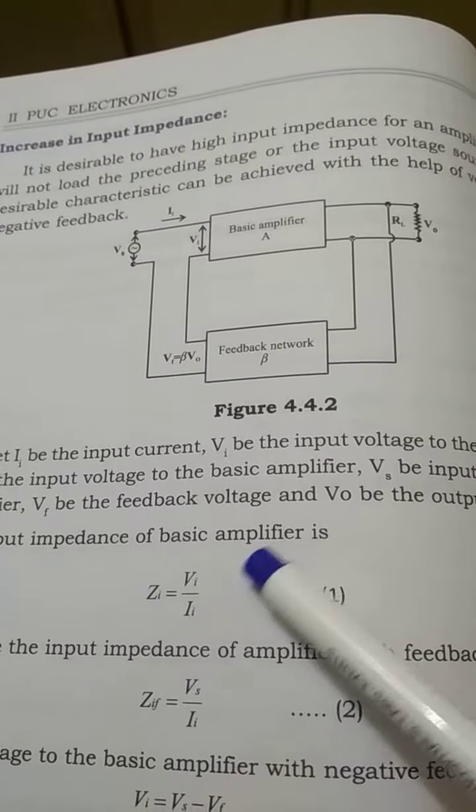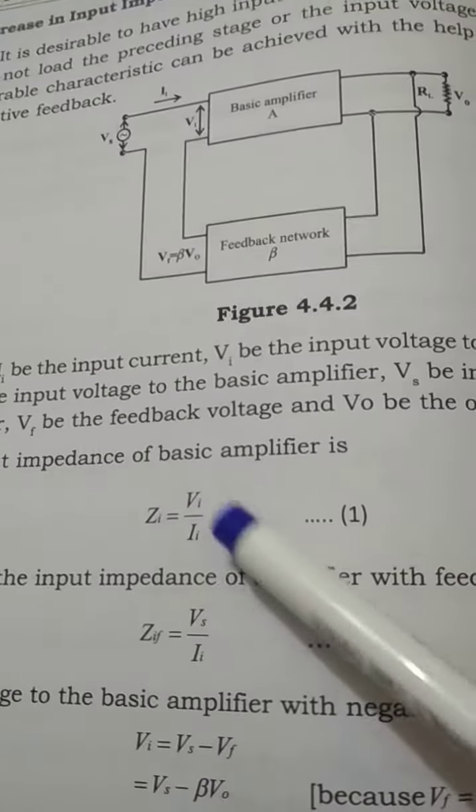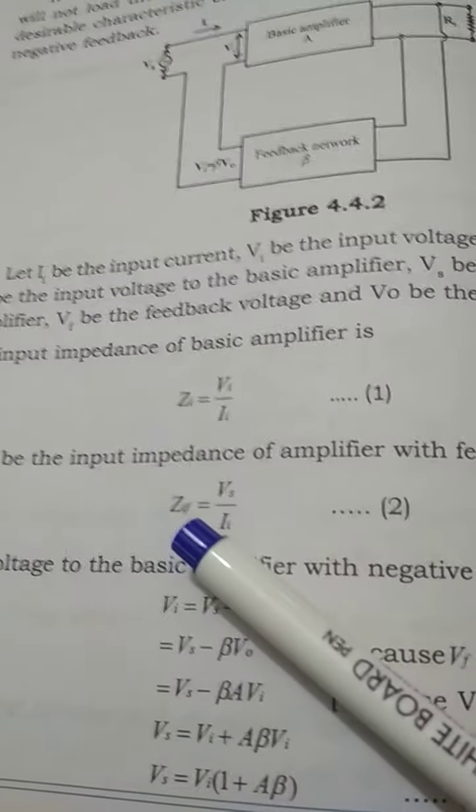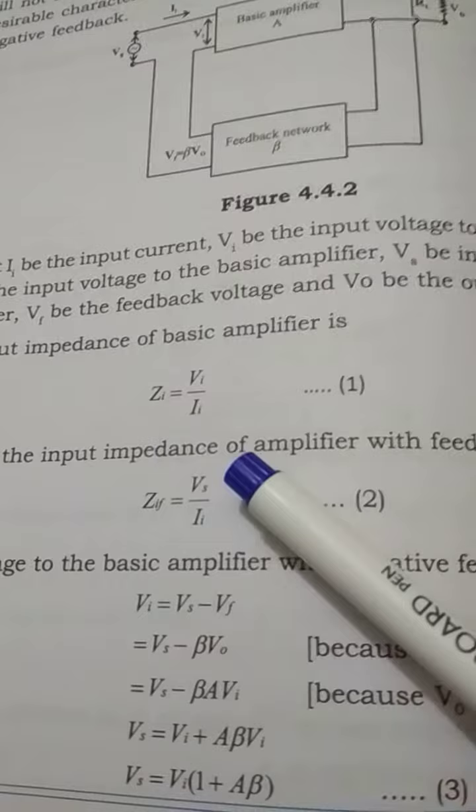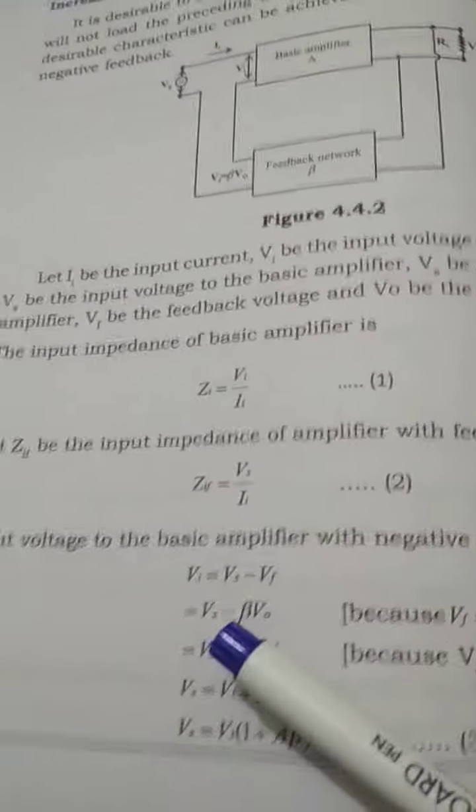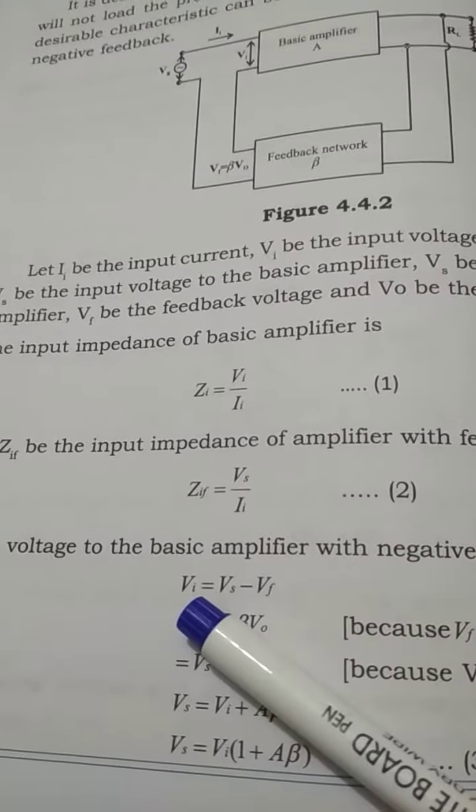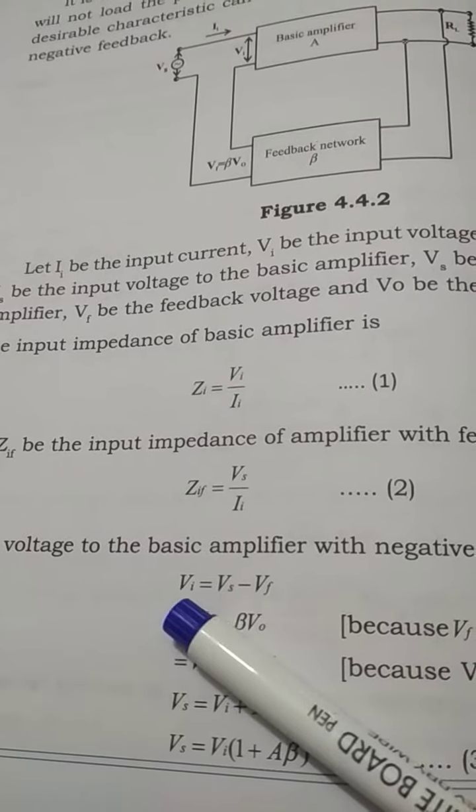...is given by Vi divided by Ii. The input impedance with feedback is given by Vs divided by Ii, where Vs is the supply voltage. Let us derive this now. For any negative feedback, the input voltage Vi...